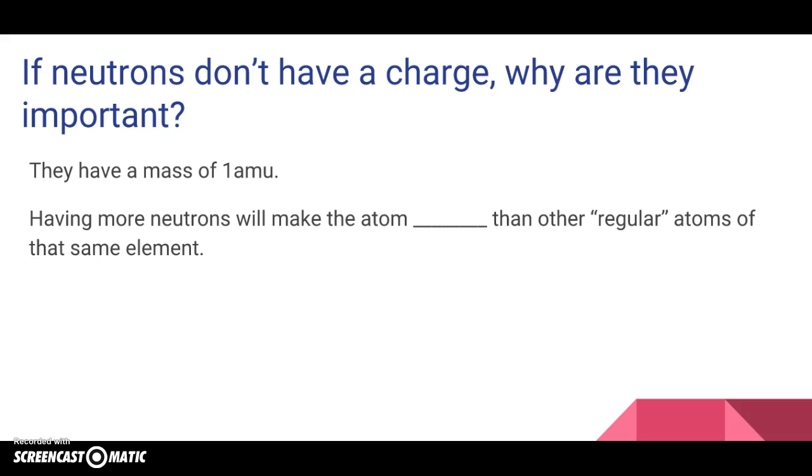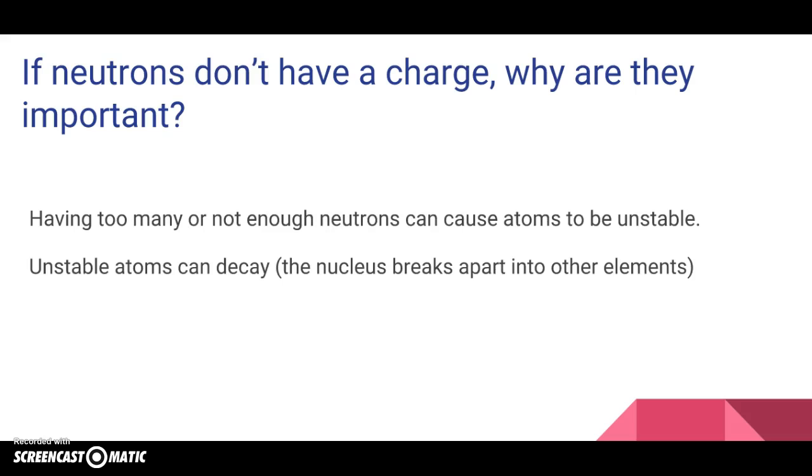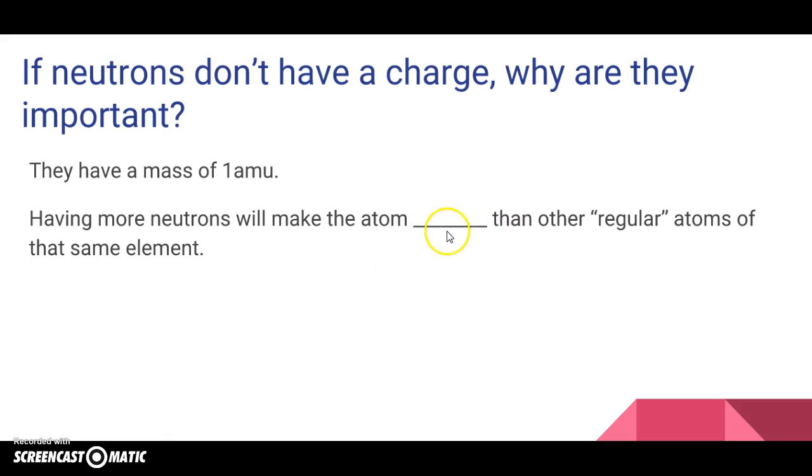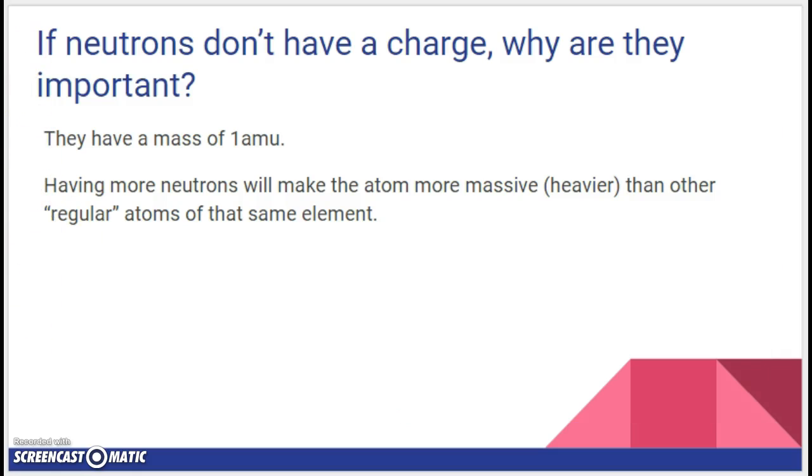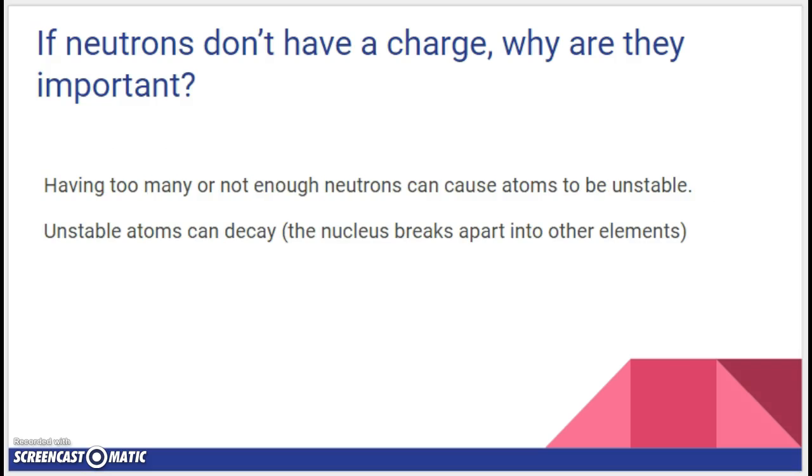But neutrons don't have a charge. So why are they important? Well, neutrons have a mass of 1 amu. Having more neutrons will make the atom more massive than other regular atoms of that same element. If each neutron weighs 1 amu and I have more of them, it's going to make them heavier or more massive. So make sure you write this down in your notes, especially this sentence. Obviously, if you have less neutrons, then the atom is lighter. Another reason why they're important: having too many or not enough neutrons can cause atoms to be unstable. And we're going to talk a lot more about this in a different unit, about nuclear chemistry. But unstable atoms can decay. So the nucleus breaks apart into other elements.